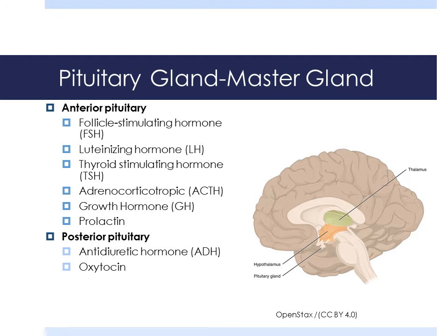The pituitary gland is the master gland. It releases a broad range of hormones which regulate other glands. When a hormone level becomes too high, the body tells the hypothalamus, which in turn tells the pituitary, to stop producing the hormone. This is called a negative feedback system — I think of it like a furnace: once it's reached its temperature, it shuts off. This kind of system regulates most of the body.